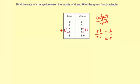That means the rate of change for this part of the table, from 4 to 6 for the inputs, is 1 half or 0.5.